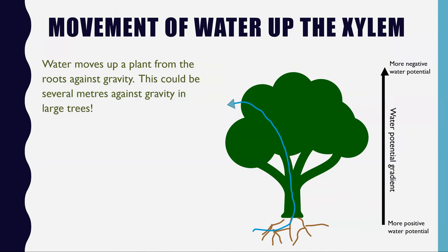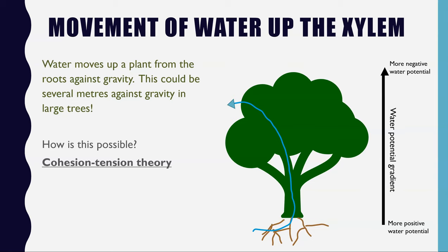That covers transpiration. The next idea is the cohesion tension theory, which explains how water evaporates out of leaves and then an entire column of water moves up to replace it against gravity. For some plants such as large trees, water may move against gravity for several metres. The cohesion tension theory is a combination of cohesion, adhesion or capillarity, and root pressure.